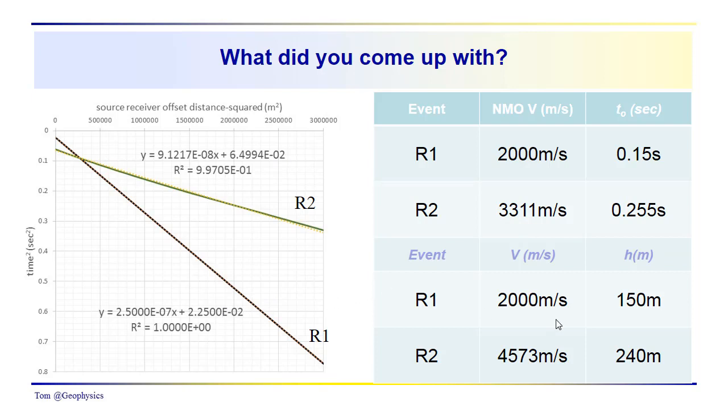We use the Dix equation. We come up with interval velocities of 2,000 meters per second, and using that with this T0 time, we come up with a thickness of 150 meters, and we have an interval velocity of 4573 for the second layer and a thickness of 240 meters. So those would be the results that you'd get from an analysis of this data.